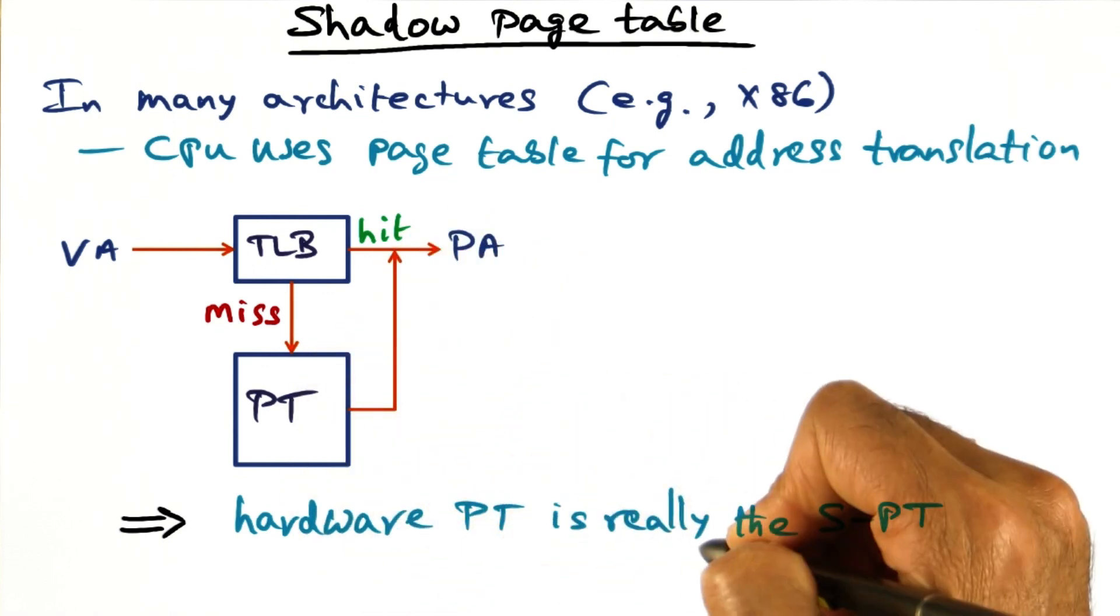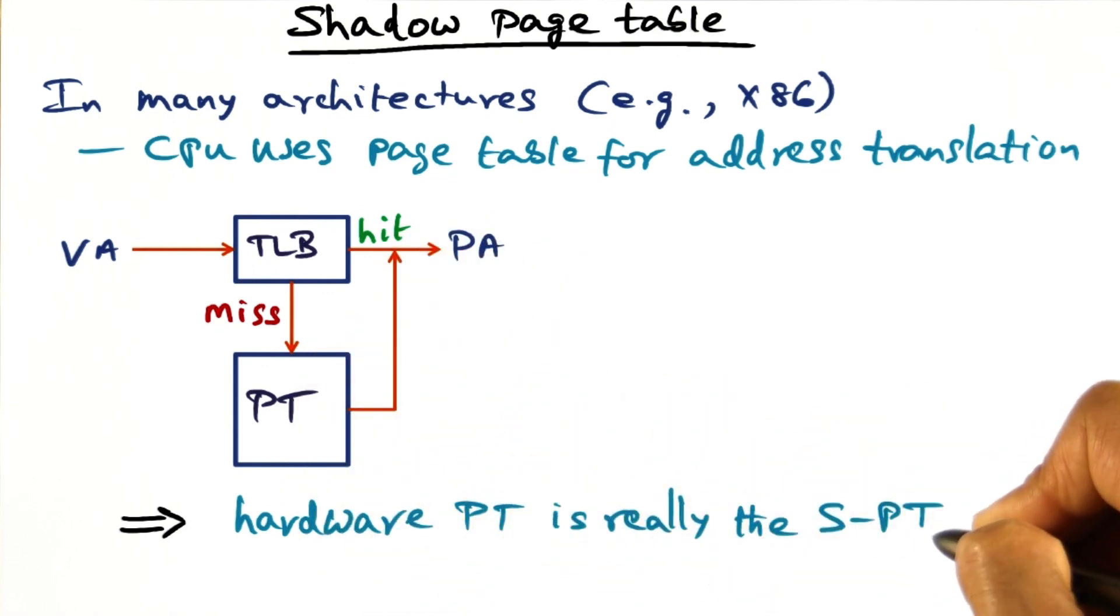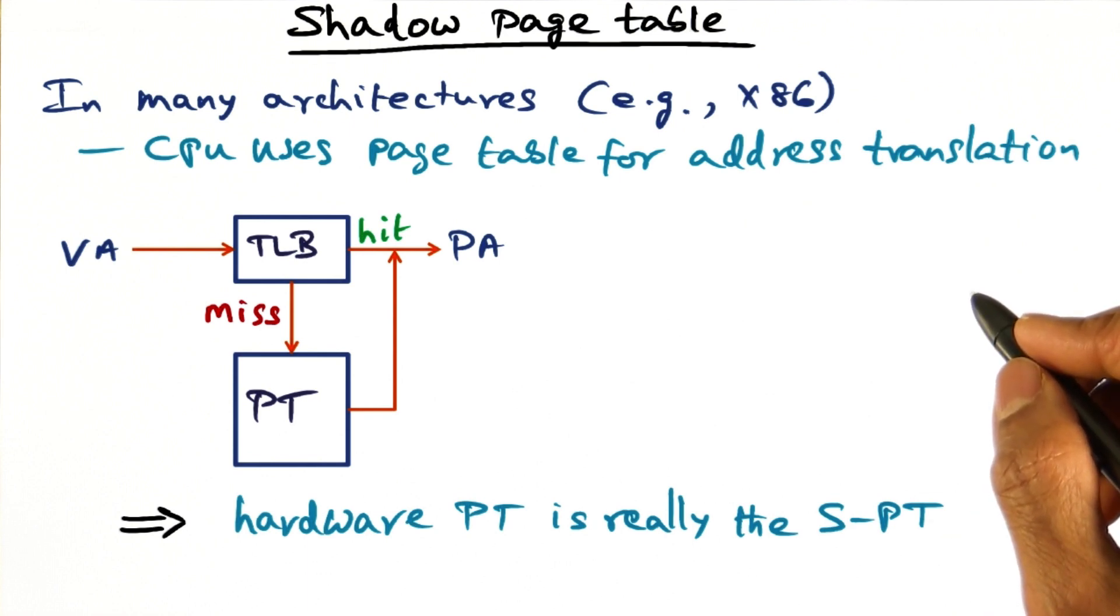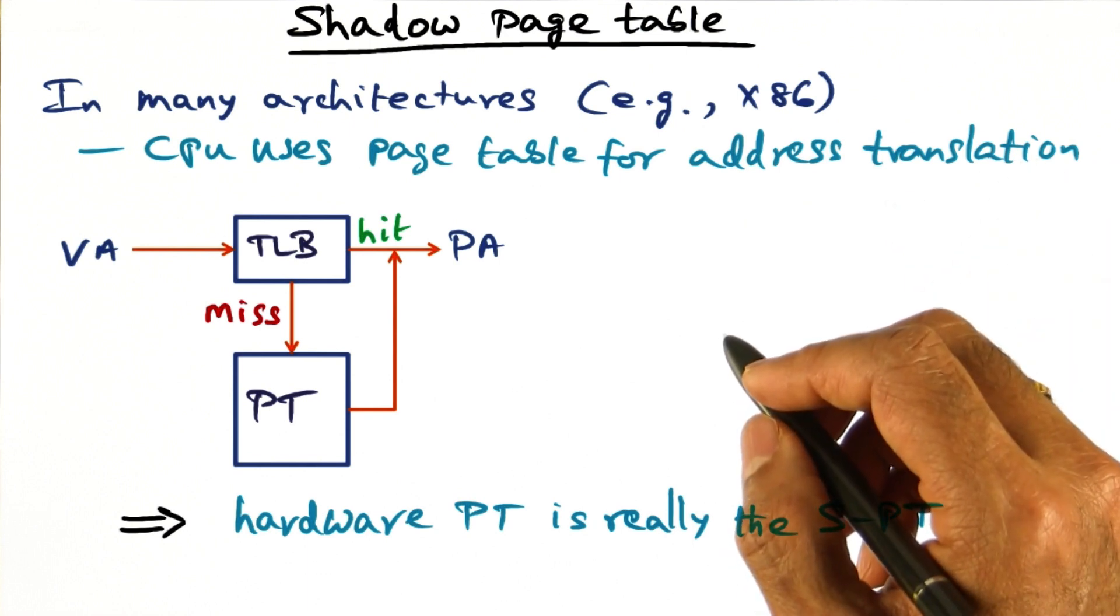In other words, the hardware page table is really the shadow page table in the virtualized setting, if the architecture is going to use the page table for address translation.